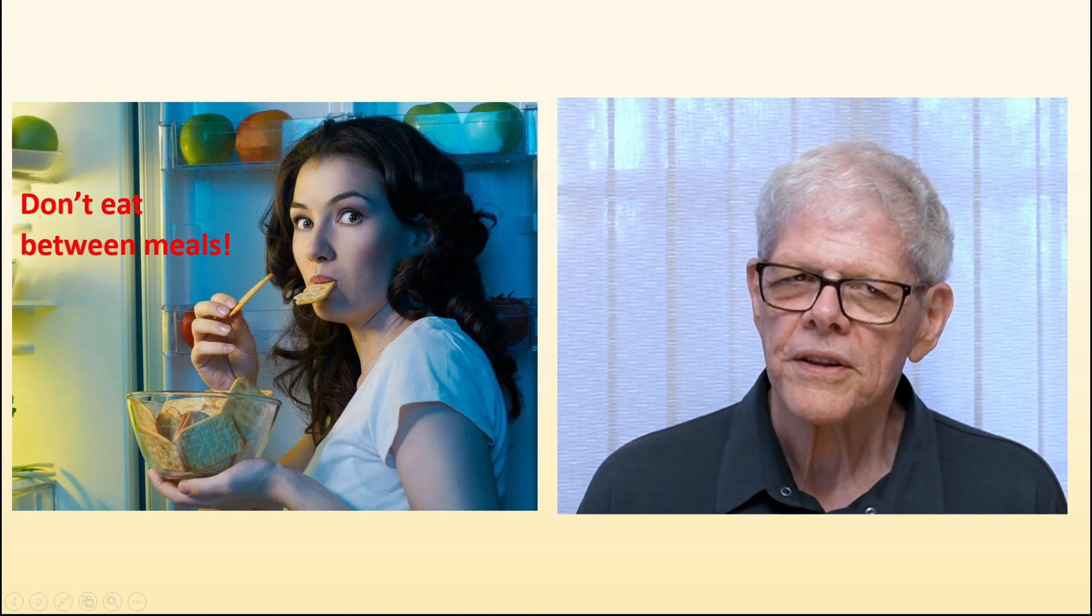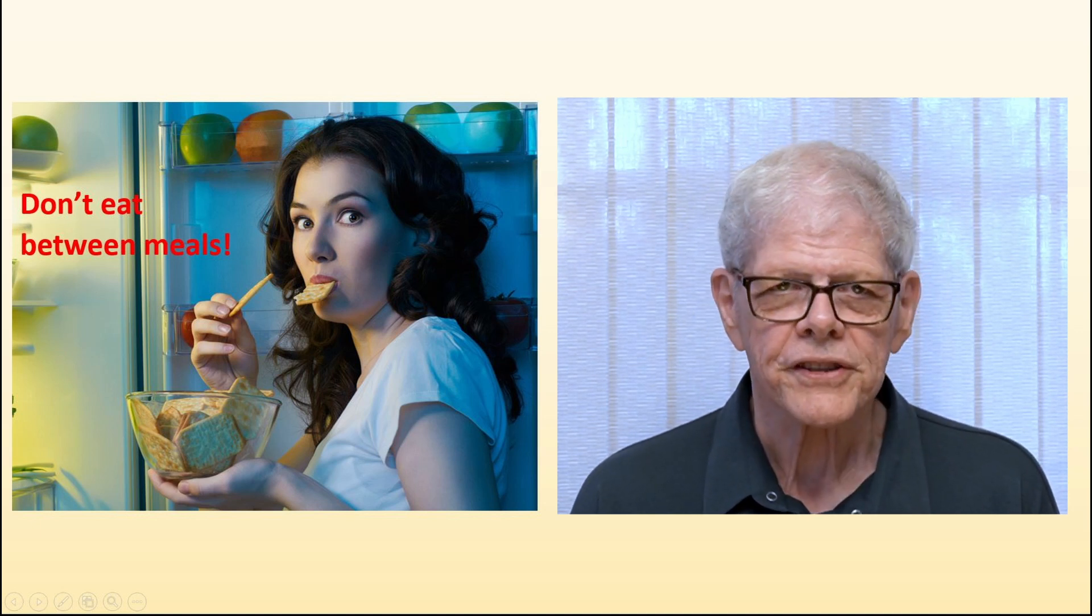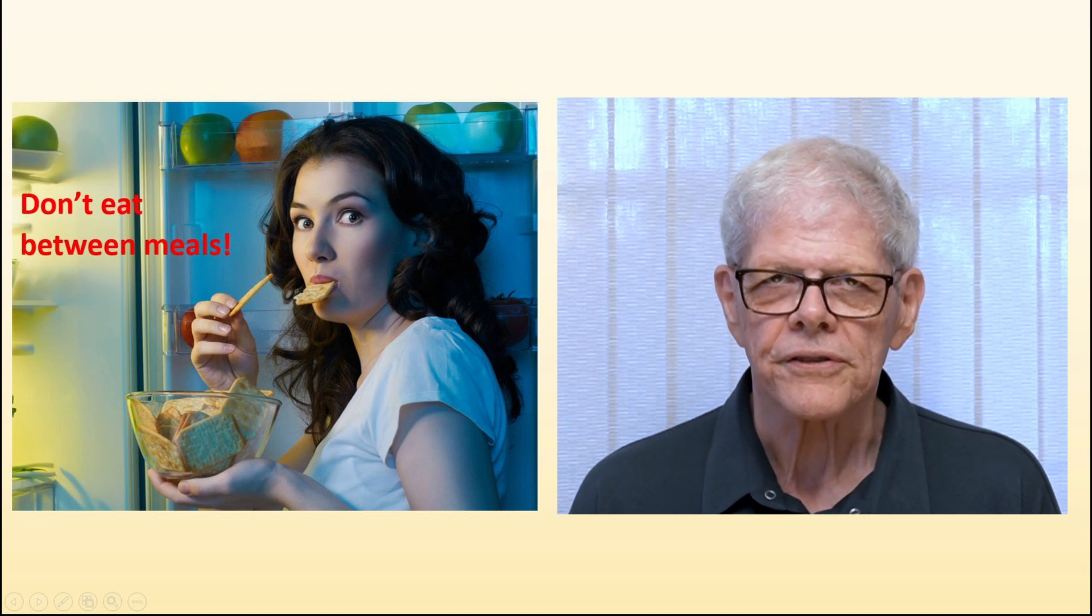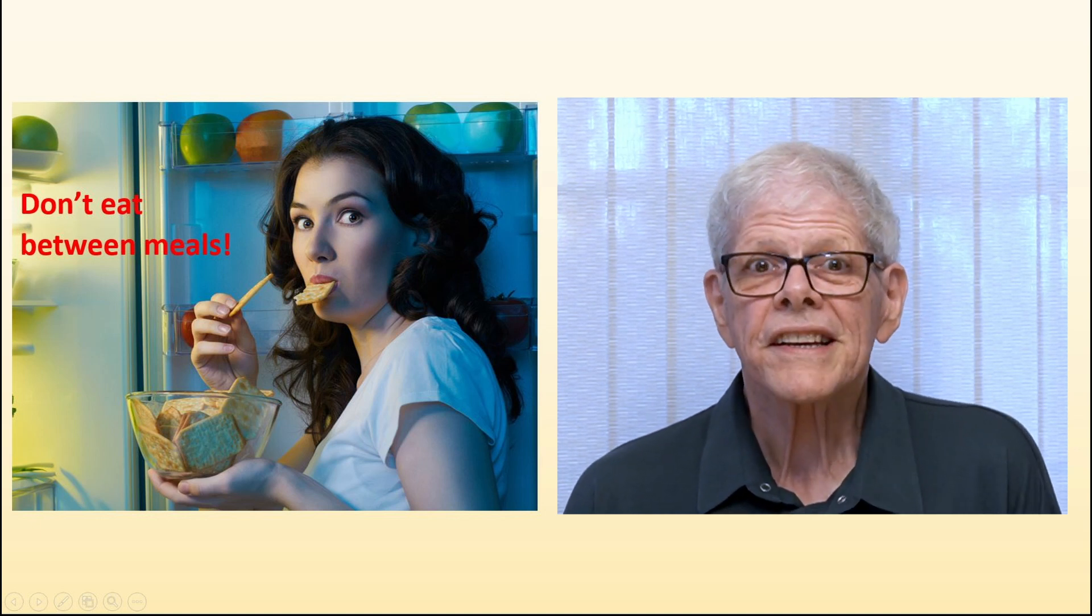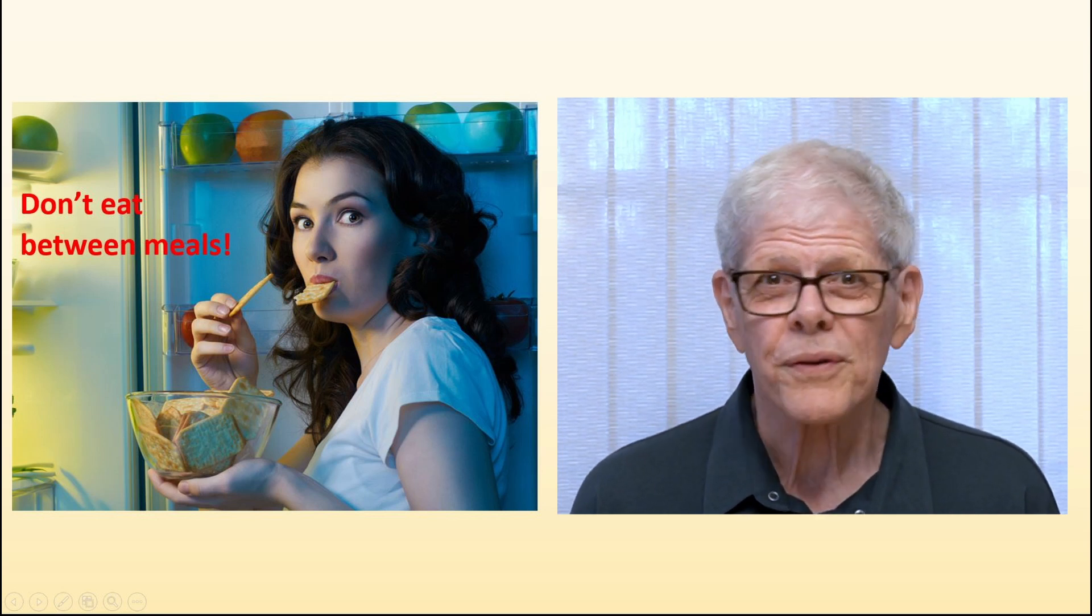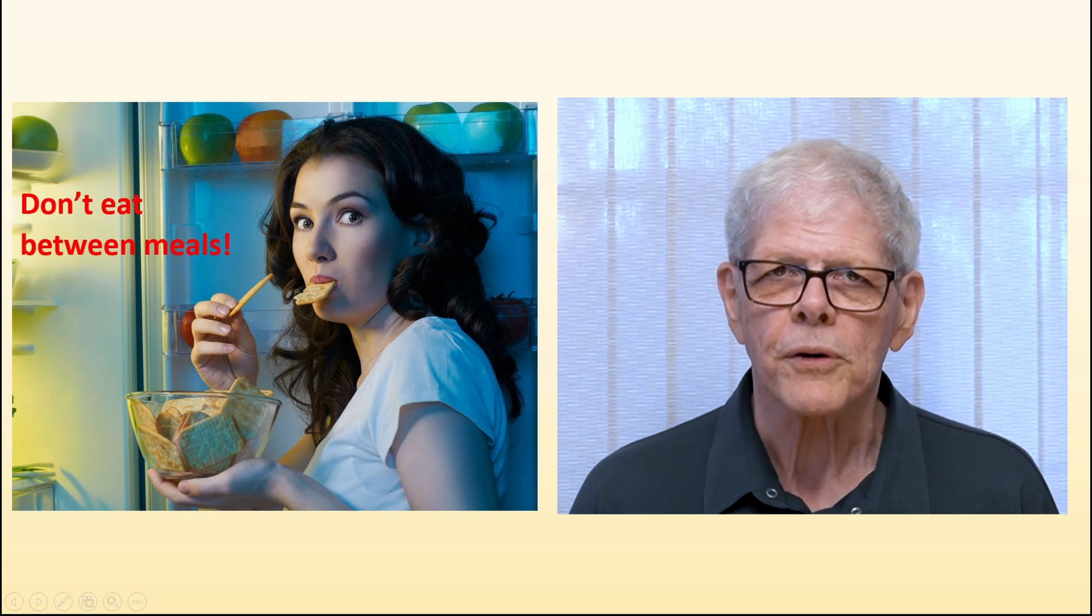Eating between meals is one of the most likely ways to torpedo your plan and it probably affects your insulin levels and other factors that alter your results. If you've allocated a certain number of calories to each meal and then eat those calories before the meal, you may very well be left without enough calories when mealtime rolls around.